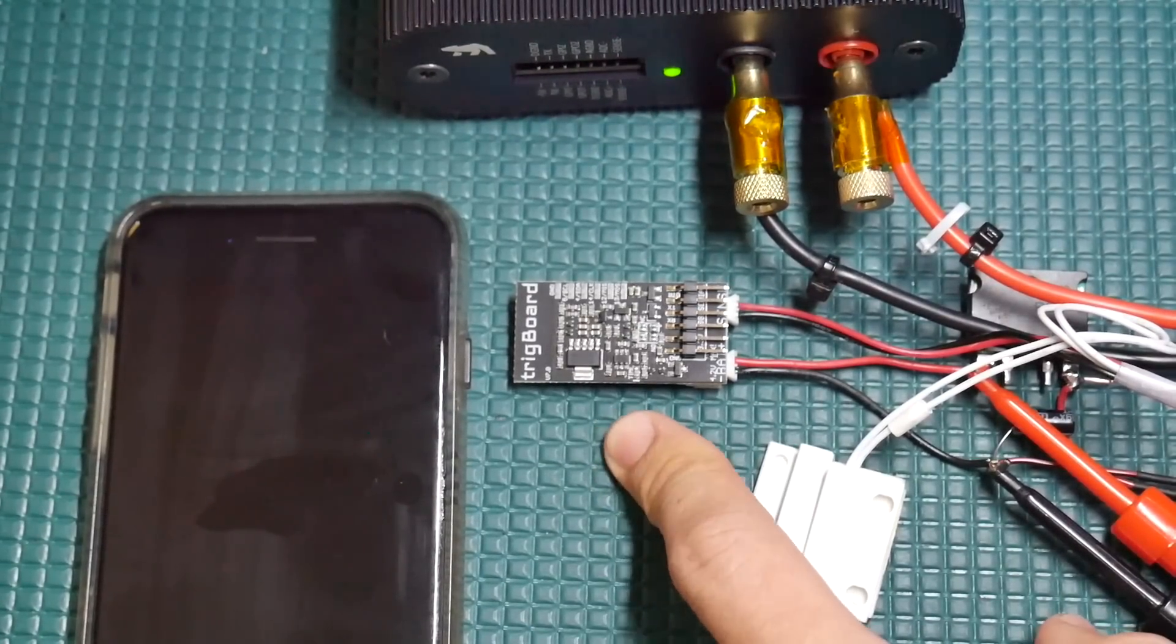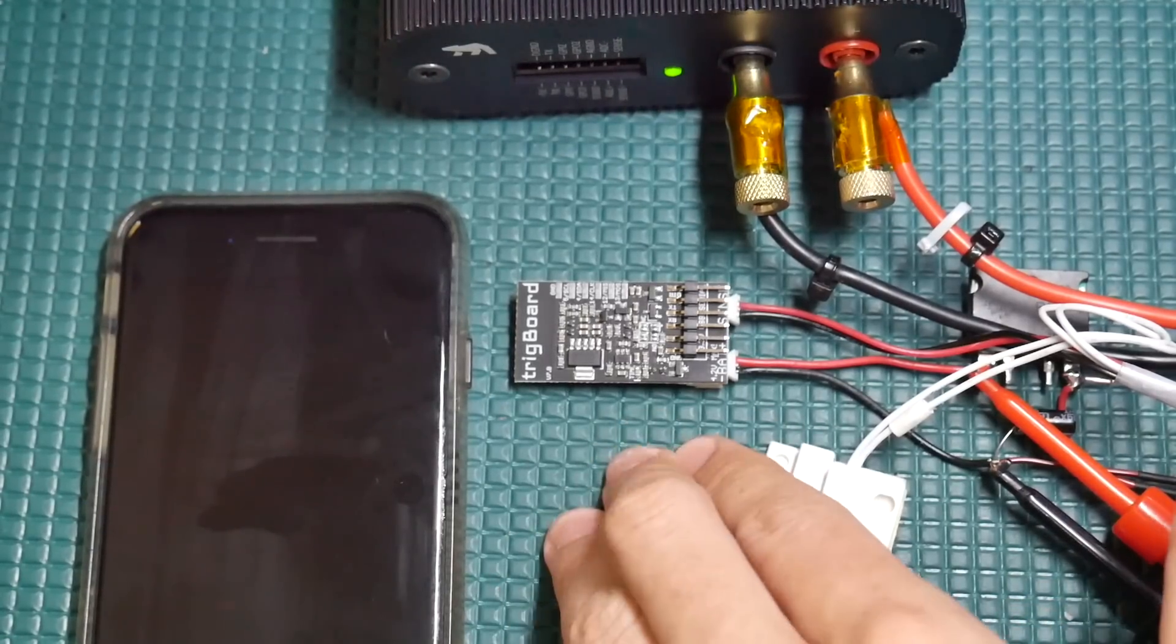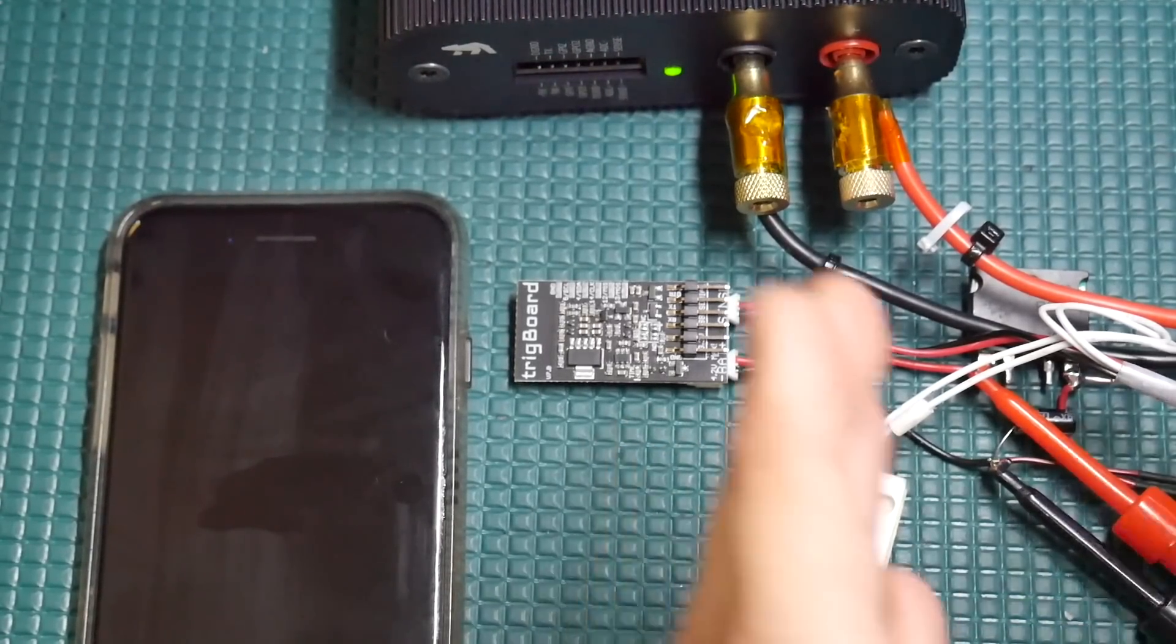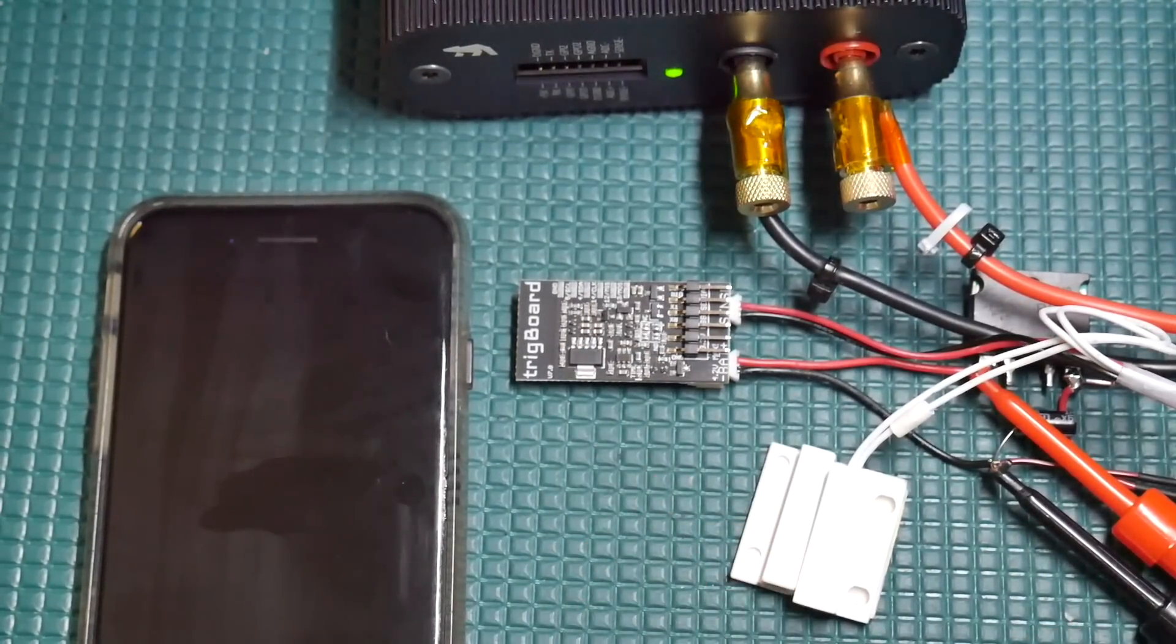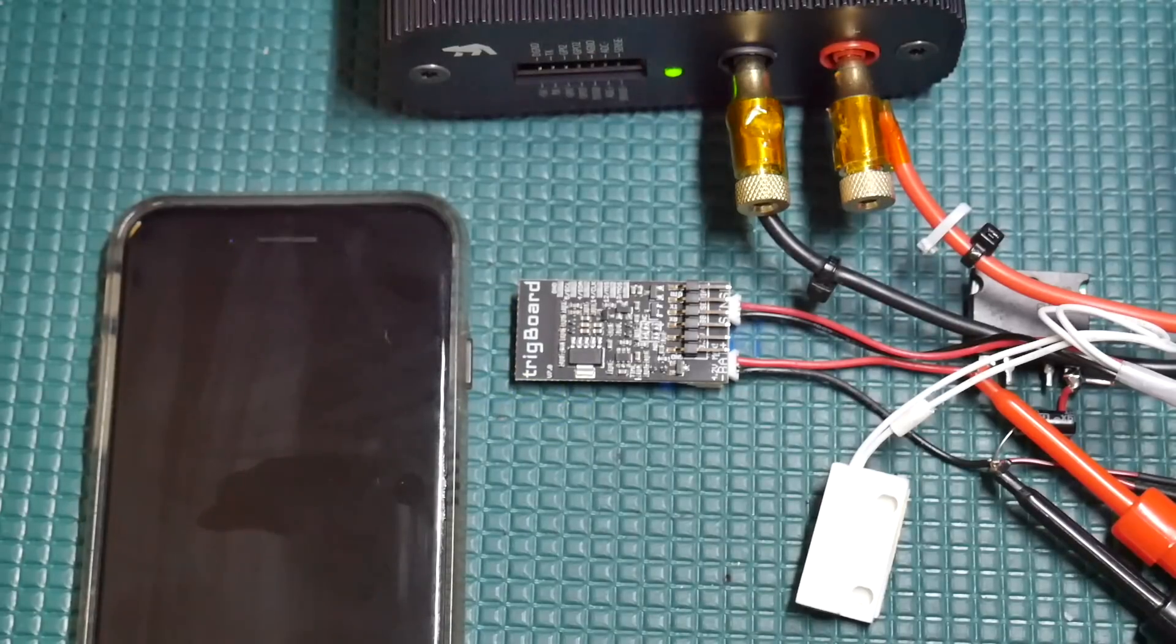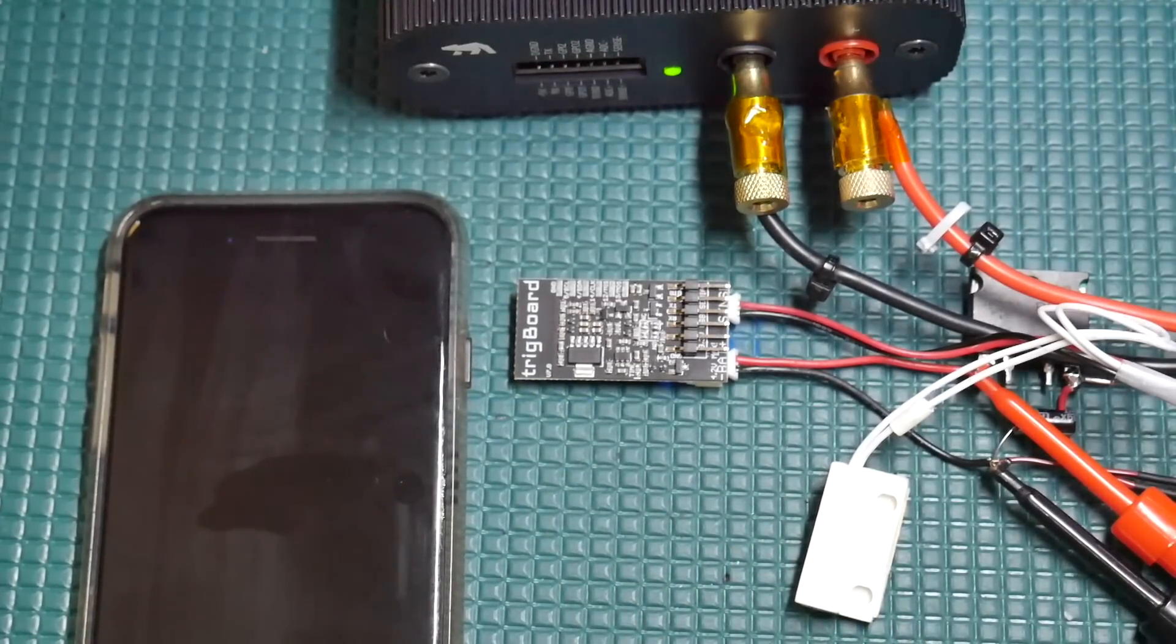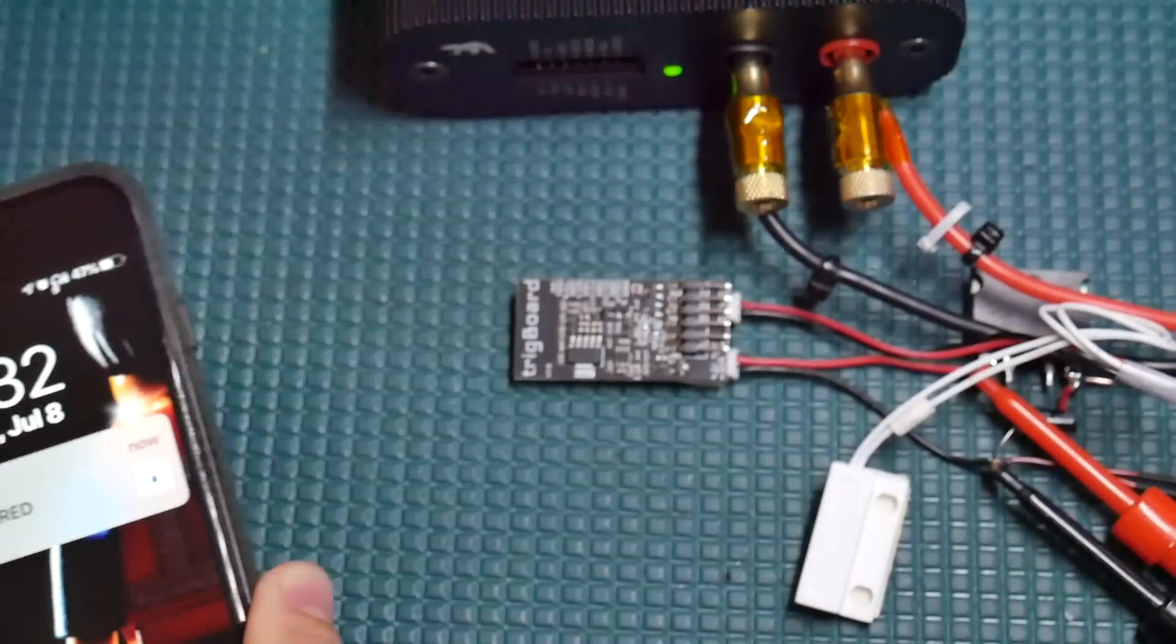We're going to use the Trigboard as an example, which is this ultra low power ESP8266 platform. I've talked about this in previous videos - it sleeps at less than one microamp. I've got a little door switch set up here so when I open the door it wakes the Trigboard up, connects to the Wi-Fi network, and sends out that push notification within 10 seconds to my phone. So there you have it, pretty cool.